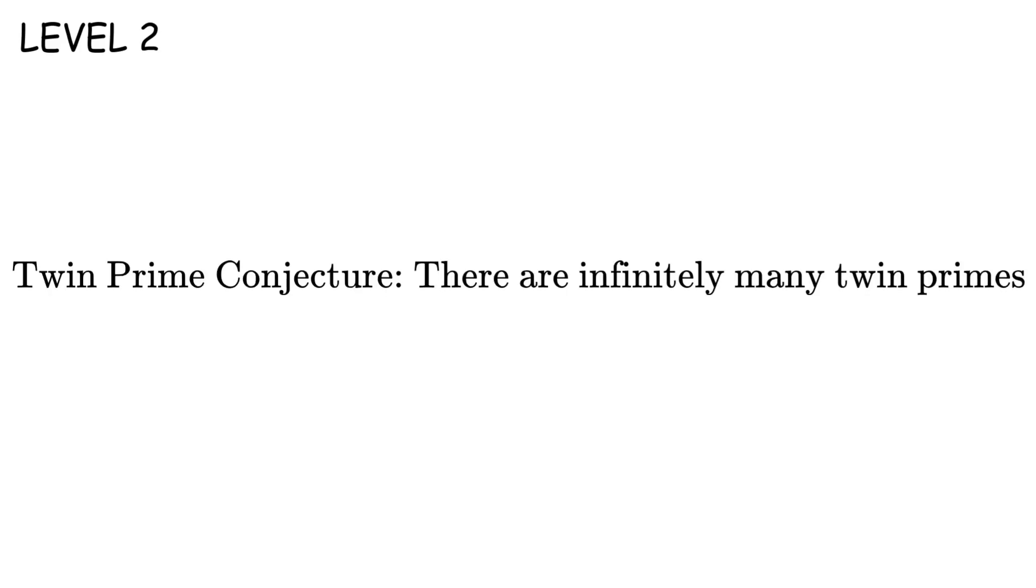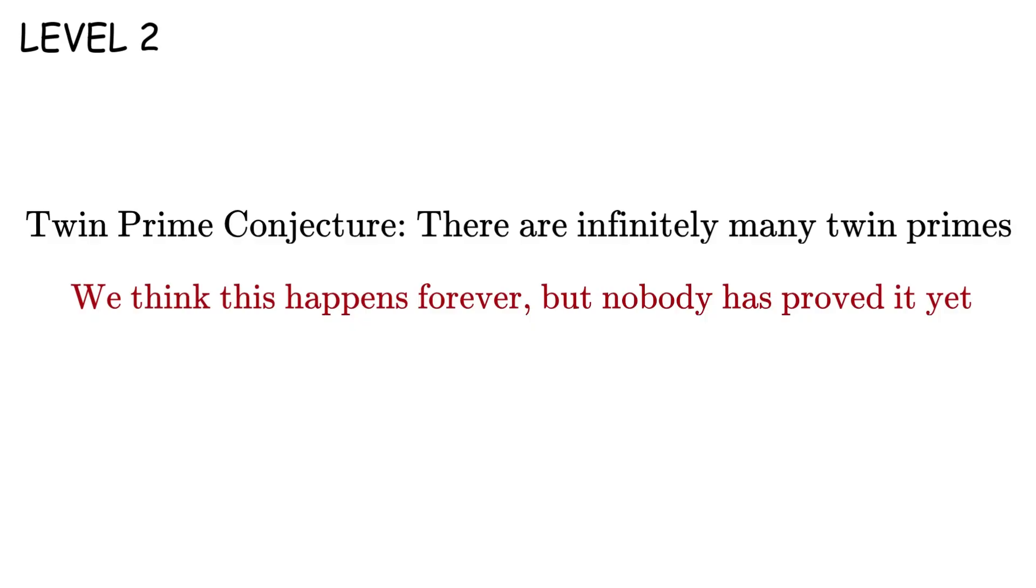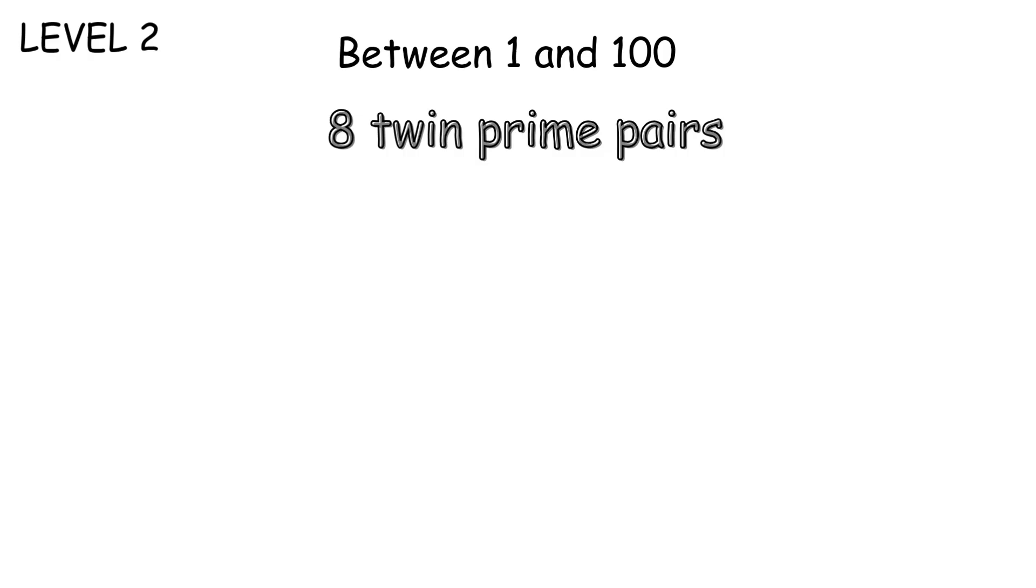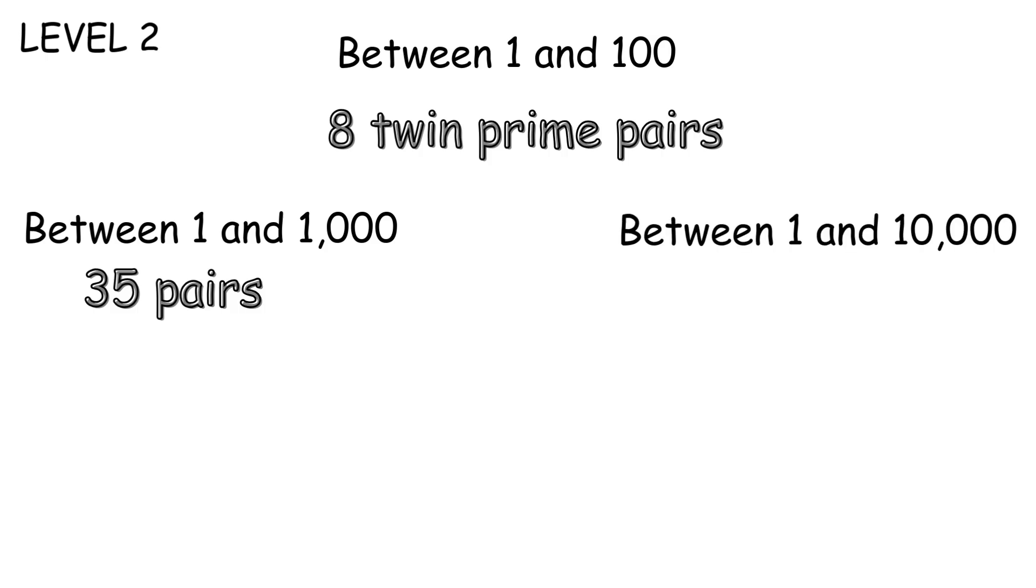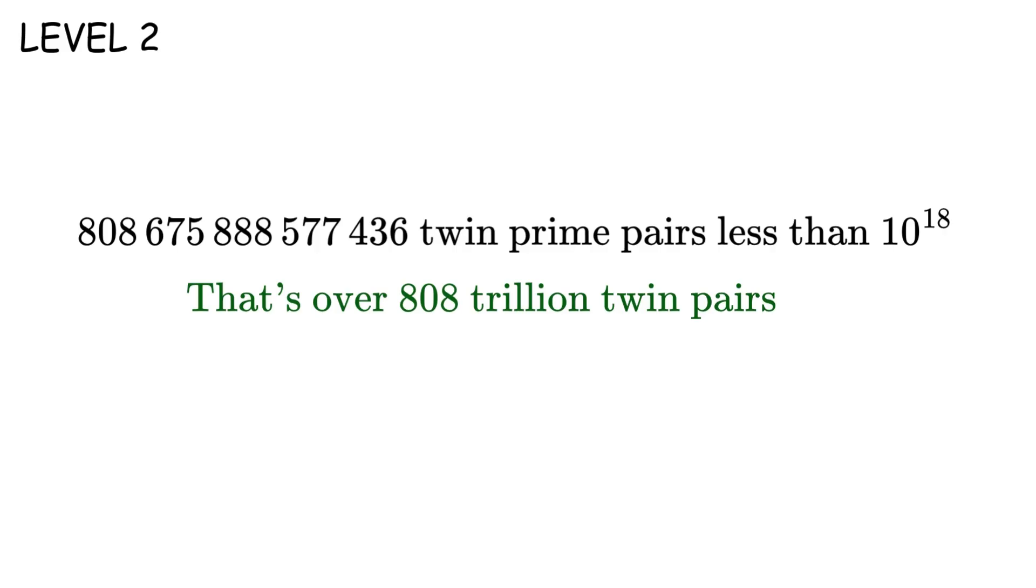Now the twin prime conjecture says there are infinitely many twin primes, but nobody's proven it yet. So let's count them. The first twin prime pairs are 3 and 5, 5 and 7, 11 and 13. They seem pretty common at first. Between 1 and 100, there are 8 twin prime pairs. Between 1 and 1,000, there are 35 pairs. Between 1 and 10,000, there are 205 pairs. Between 1 and 100,000, there are 1,224 pairs. And here's the crazy part. There are 808,675,888,577,436 twin prime pairs less than 10 raised to the power of 18. That's over 808 trillion pairs. Still seems like a lot, right?